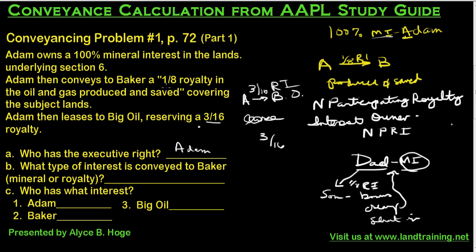The question is what is Adam conveying to Baker — is it a royalty interest or a mineral interest? If it's a mineral interest, that's very important because that's who we take the lease from. If it's a royalty interest, we're not that concerned at the leasing stage — it will show up on a division order pay sheet, and the title attorney will pick up on it. Key language: if a deed says 'produced and saved,' that is not a mineral interest. A mineral interest will say 'oil and gas in and under my land.' So Baker received only a royalty interest — a non-participating royalty interest — not a mineral interest.